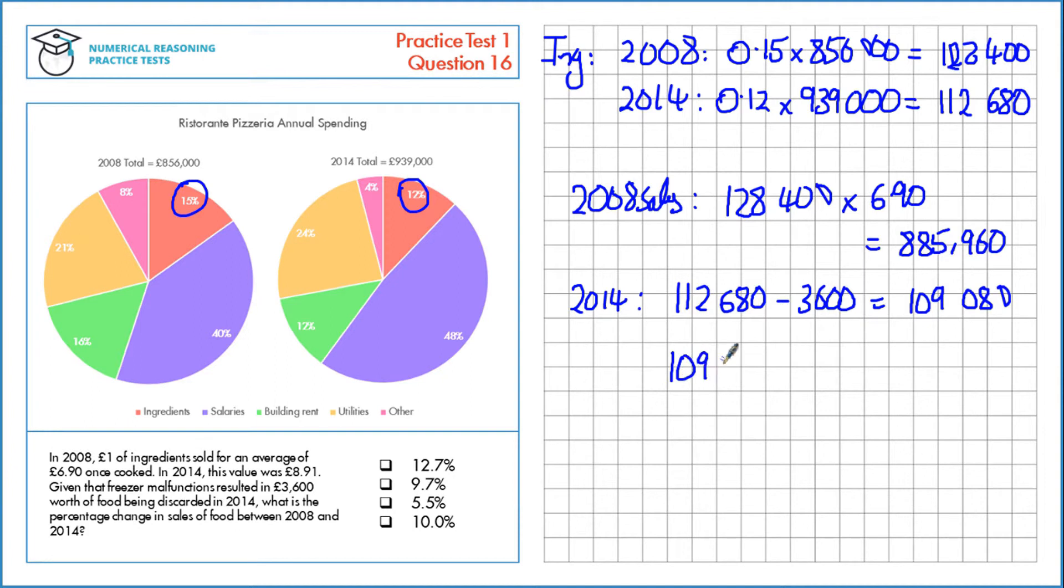Next, £109,080 multiplied by this value here, £8.91, is £971,902.80.